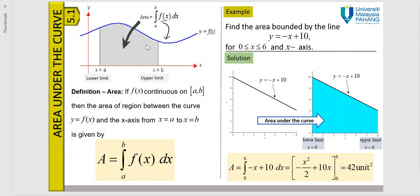Finding the integral from a to b is actually finding the area under the curve. If this is my integral, then I have a lower limit from a to b, and I find this area — the region R — bounded by the x-axis. By definition, if f(x) is continuous on the interval [a, b], then the area of the region between the curve y = f(x) and the x-axis from a to b is given by evaluating this definite integral.